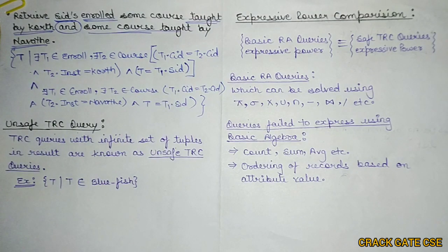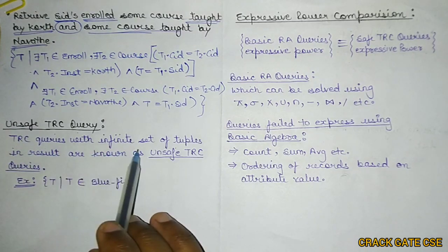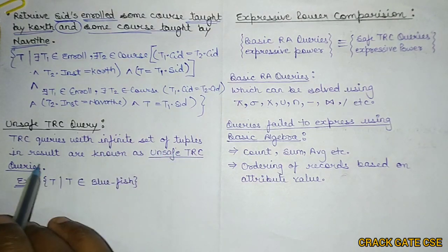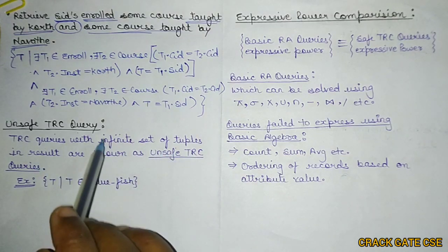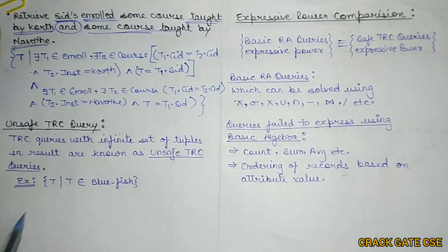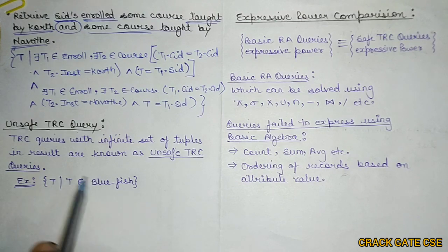Now the next topic: what is an unsafe TRC query? If a query produces an infinite set of tuples in a result, then that kind of query is called an unsafe TRC query. Let me explain this with an example.